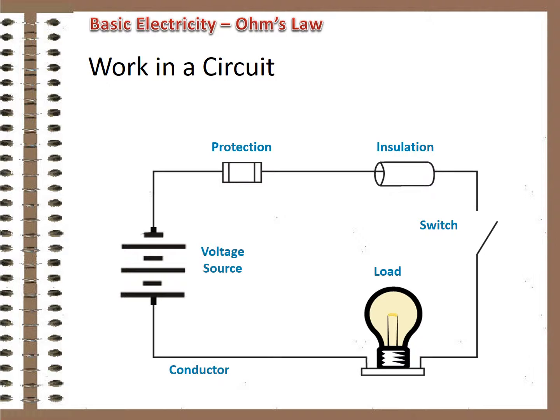The work that our simple circuit does — lighting the bulb — has two components: volts and amps. We must have both the pressure to push the energy as well as the flow of energy for our circuit to work. The measure of work in a circuit is, therefore, a combination of both, and in its simplest form is just volts times amps, which, when totaled, is called power and is measured in watts.